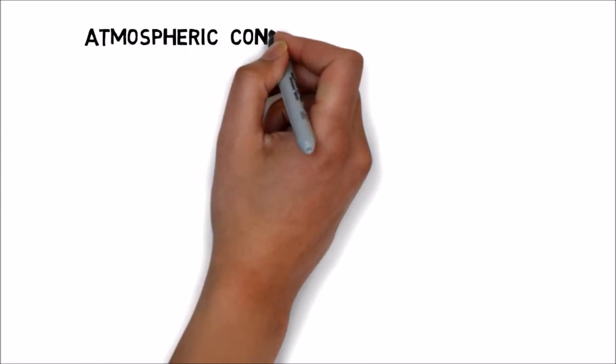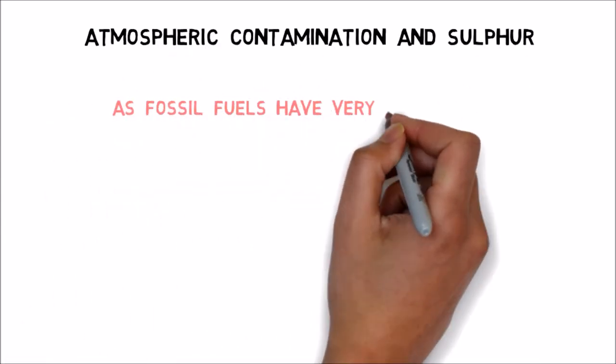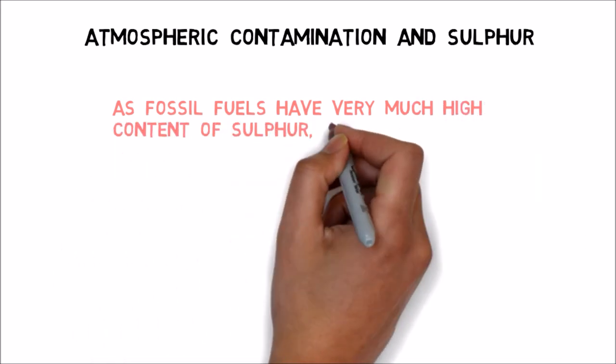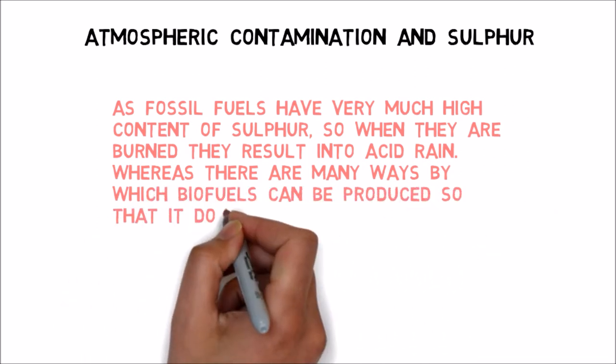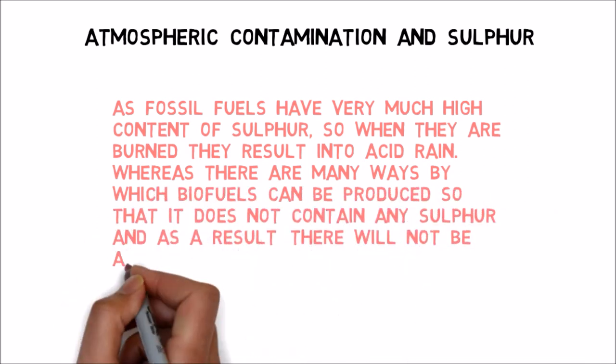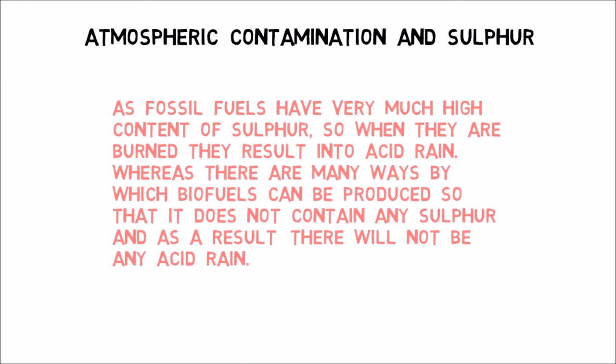Atmospheric contamination and sulfur. As fossil fuels have very much high content of sulfur, so when they are burned they result into acid rain. Whereas there are many ways by which biofuels can be produced so that it does not contain any sulfur and as a result there will not be any acid rain.